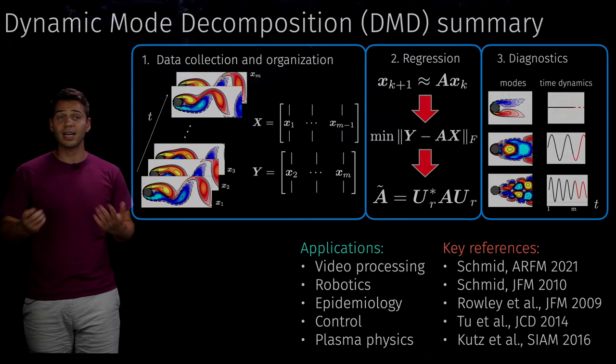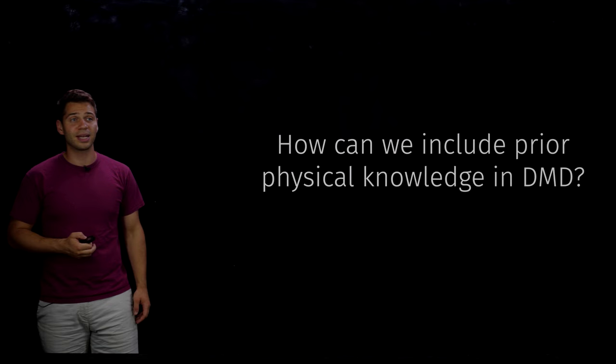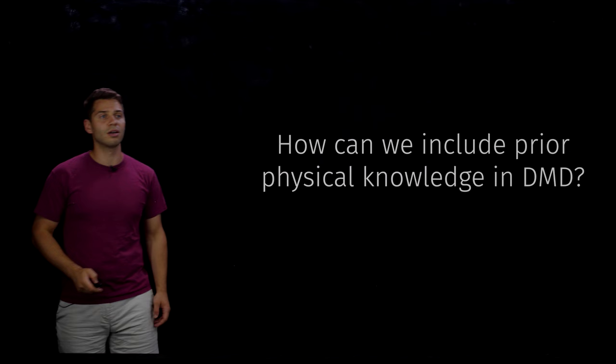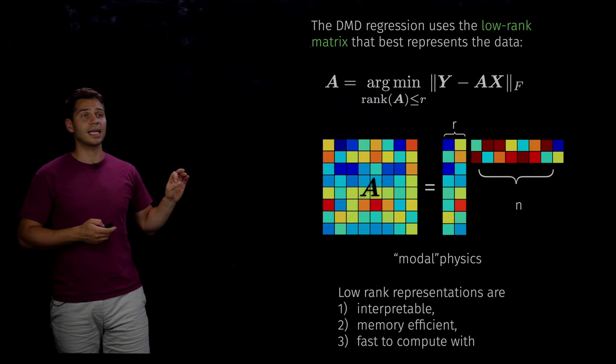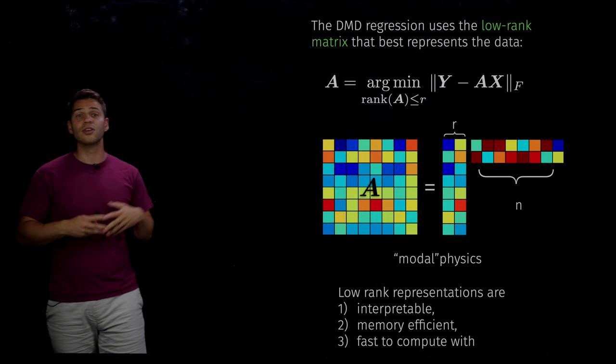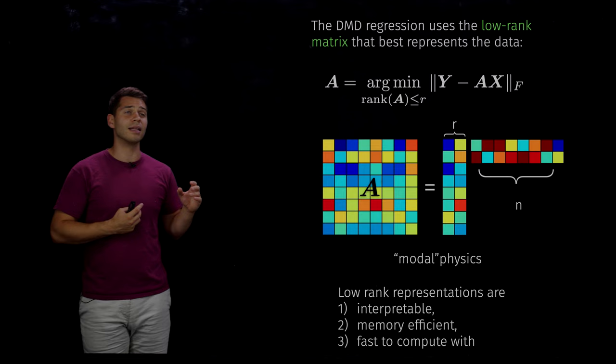We set out to address that in this work, asking how we can include prior physical knowledge into DMD. This physics-informed DMD is what we came up with. To develop it, we went back to the original DMD algorithm and reformatted it to allow physics to be seamlessly integrated. One way of looking at DMD is that it seeks a low-rank matrix that best represents the data.